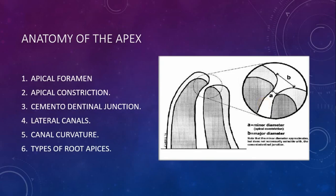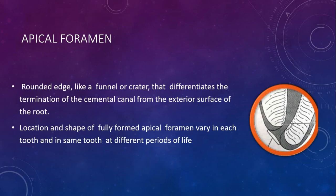Understanding the anatomy of the apex is very important to understand the concept of working length. If understood properly, we can establish an accurate working length. The root apex generally comprises the apical foramen, apical constriction, cemento-dentinal junction, lateral canals, canal curvature, and different types of root apex.